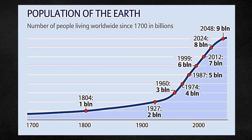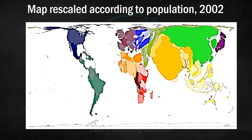Looking at this map, which has been rescaled according to population size in 2002, we see that the size of some countries or continents is actually very large compared to their actual geographical size. If we especially look at India, we know that as a proportion of the entire world area, India does not have such a high area. But if we rescale the map according to population size, we can see how large India is here.